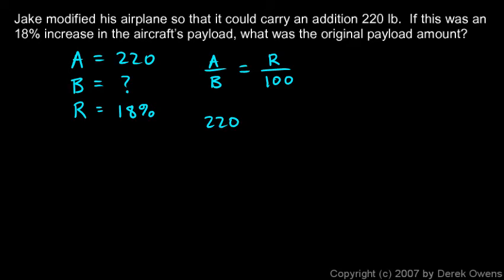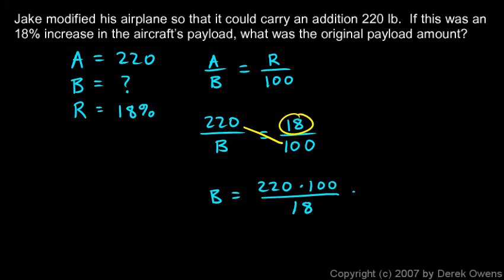A is 220 divided by B, that's going to equal 18 over 100. Then to solve for B, I'm going to multiply 220 times 100 and divide by 18. So B is 220 times 100 divided by 18. I'll pull out a calculator and do that: 220 times 100 divided by 18 comes out to be 1222 pounds. That was the original payload before he made the modifications.